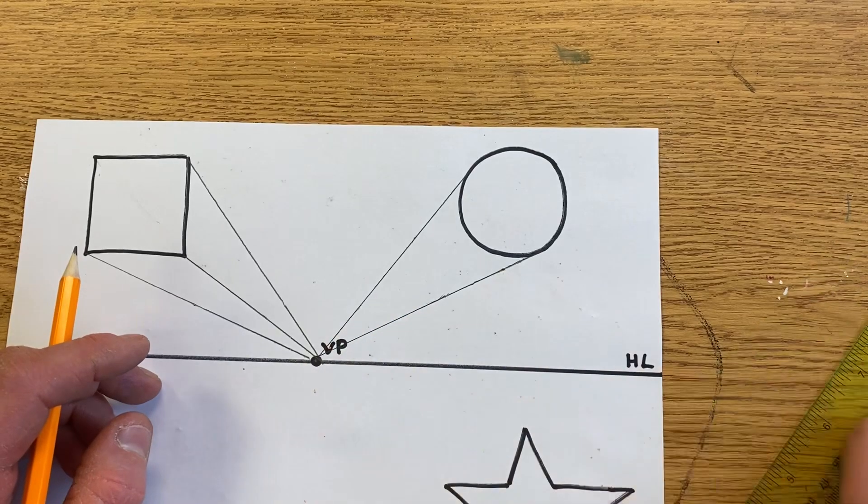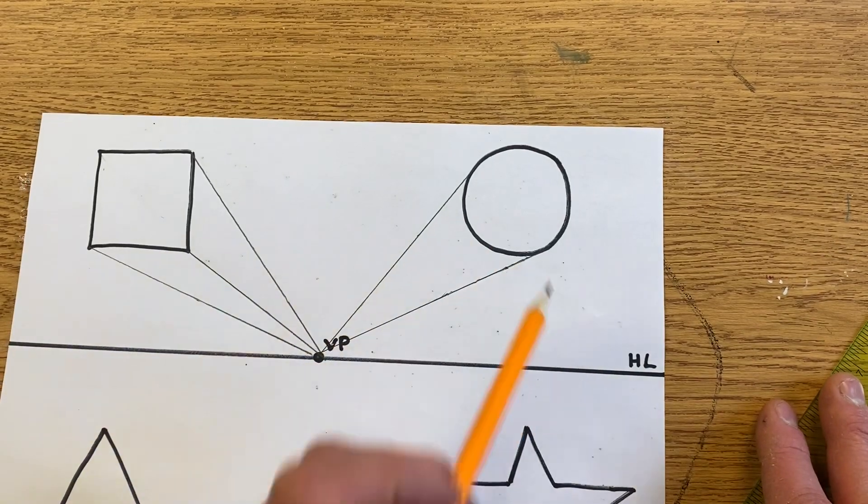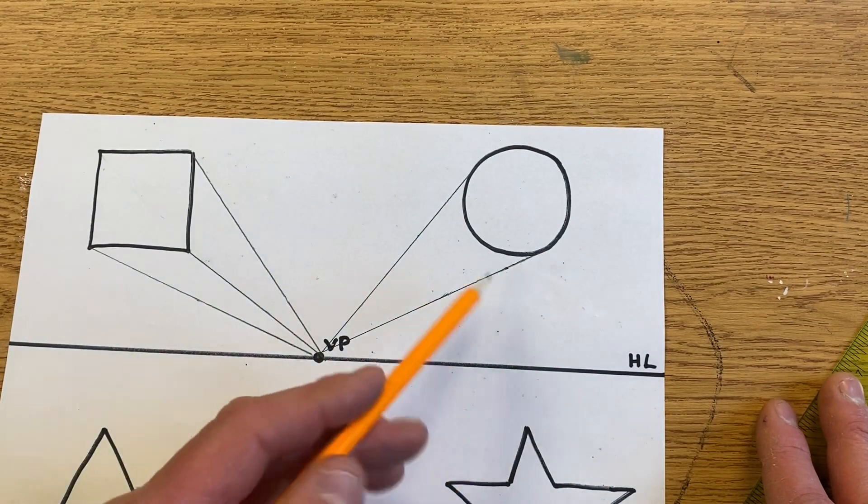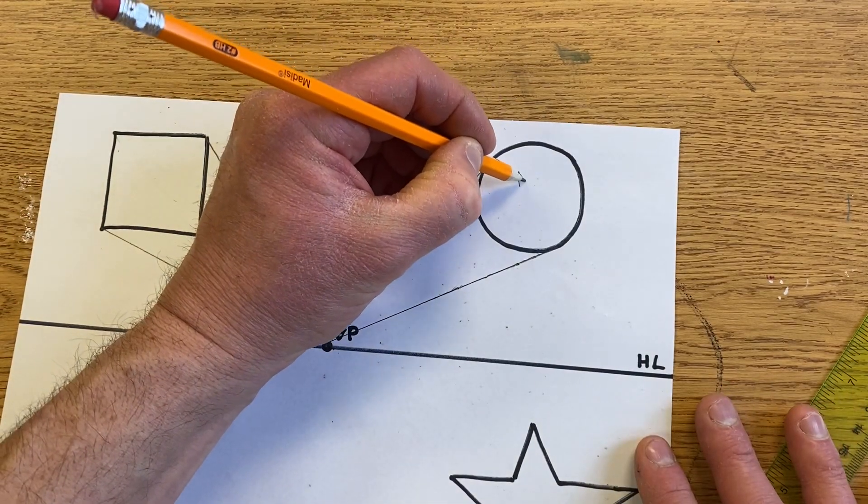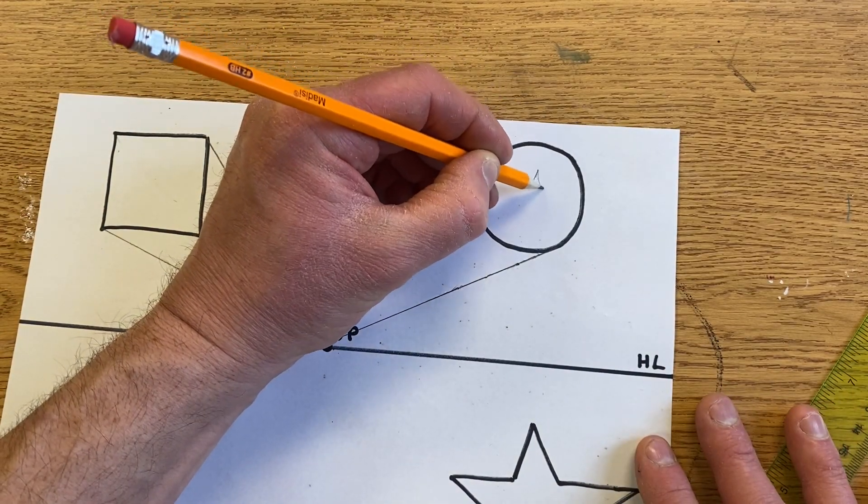That one's done. I try and tell students to imagine it as being the bat signal—that's the Batman symbol that they flash in the sky when they need help.